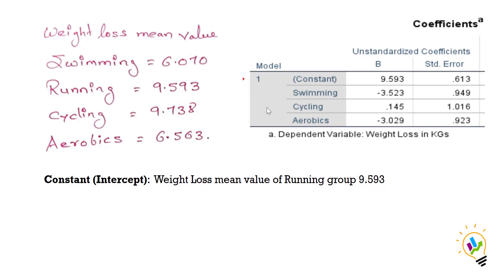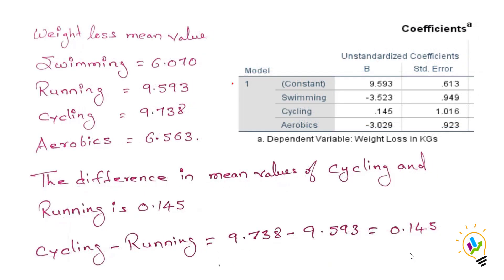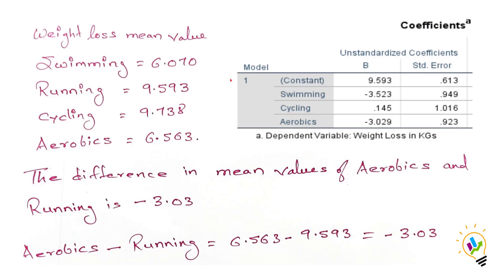The mean weight loss of the running group, 9.593, is exactly the constant value in the regression output. The coefficient for swimming (minus 3.523) is the difference: 6.070 minus 9.593 = minus 3.523. The coefficient for cycling (0.145) is 9.738 minus 9.593 = 0.145. The coefficient for aerobics (minus 3.029) is 6.563 minus 9.593 = minus 3.029.